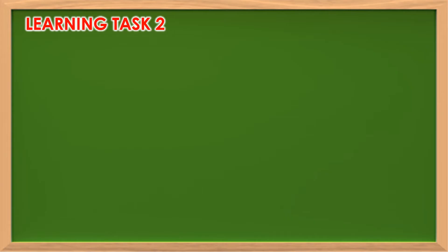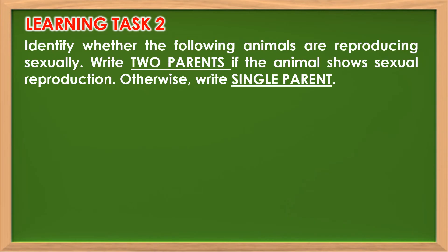Grade 5 learners, identify whether the following animals are reproducing sexually. Write '2 parents' if the animal shows sexual reproduction. Otherwise, write 'single parent.'